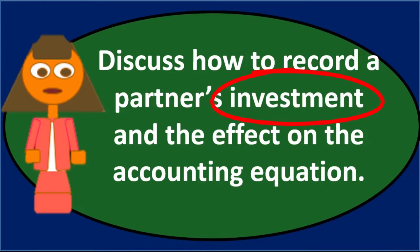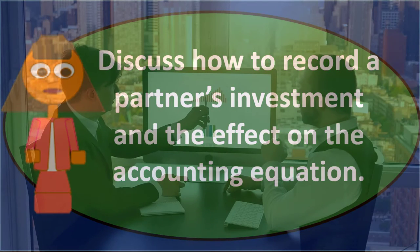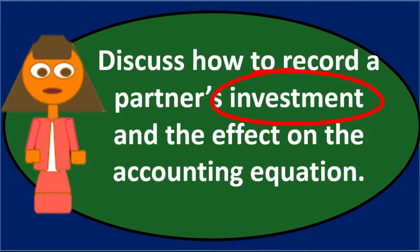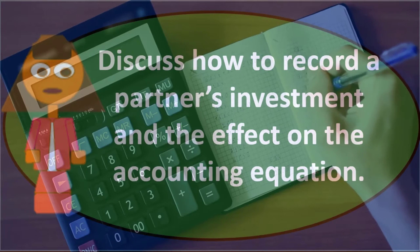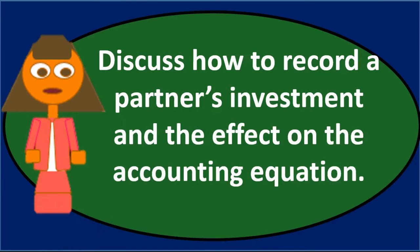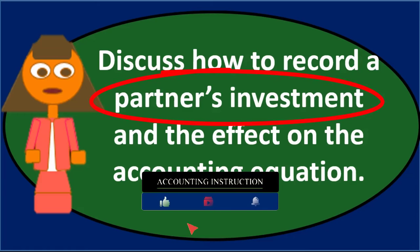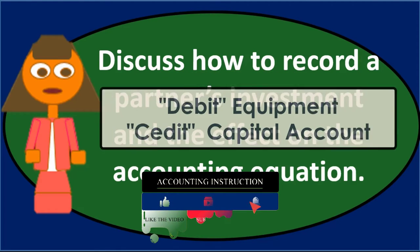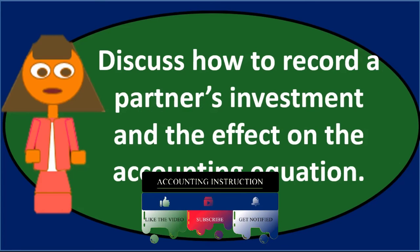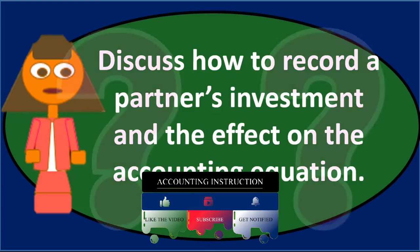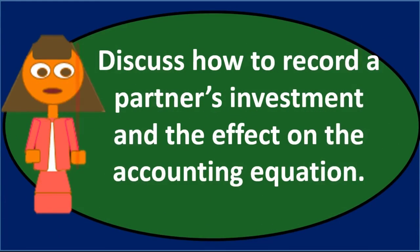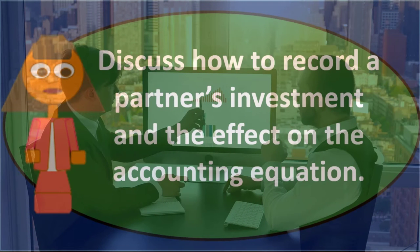That's the most simple type of initial investment. We could also have more complex initial investments. If a partner puts in something like equipment, that could be an initial investment as well. Rather than debiting cash, we would debit equipment — another type of asset — and then credit the capital account. With equipment, the question is always: what should we put the equipment on the books for? It's not really a straightforward sale, and equipment depreciates, so there's a question of actual value.